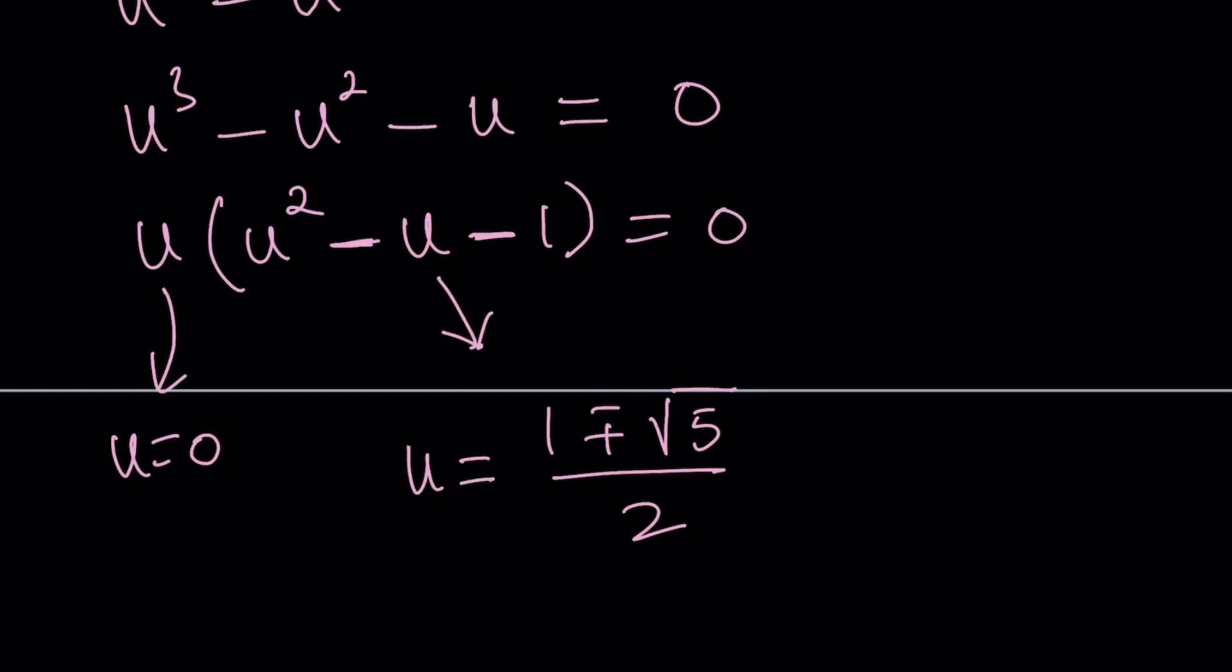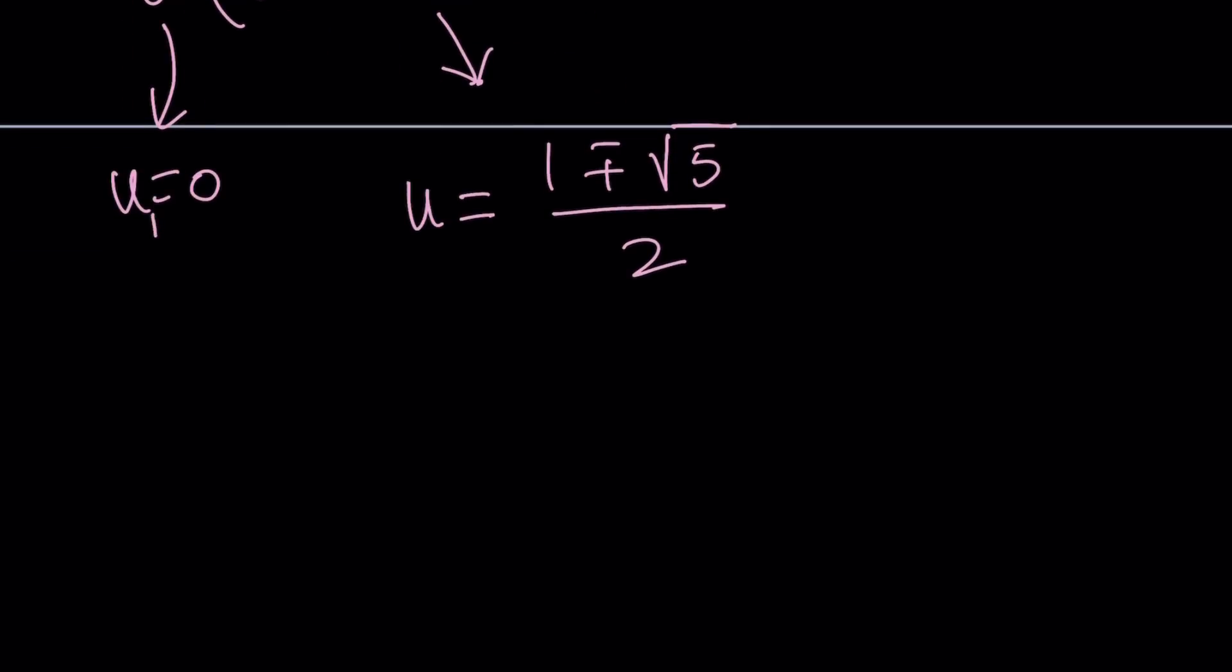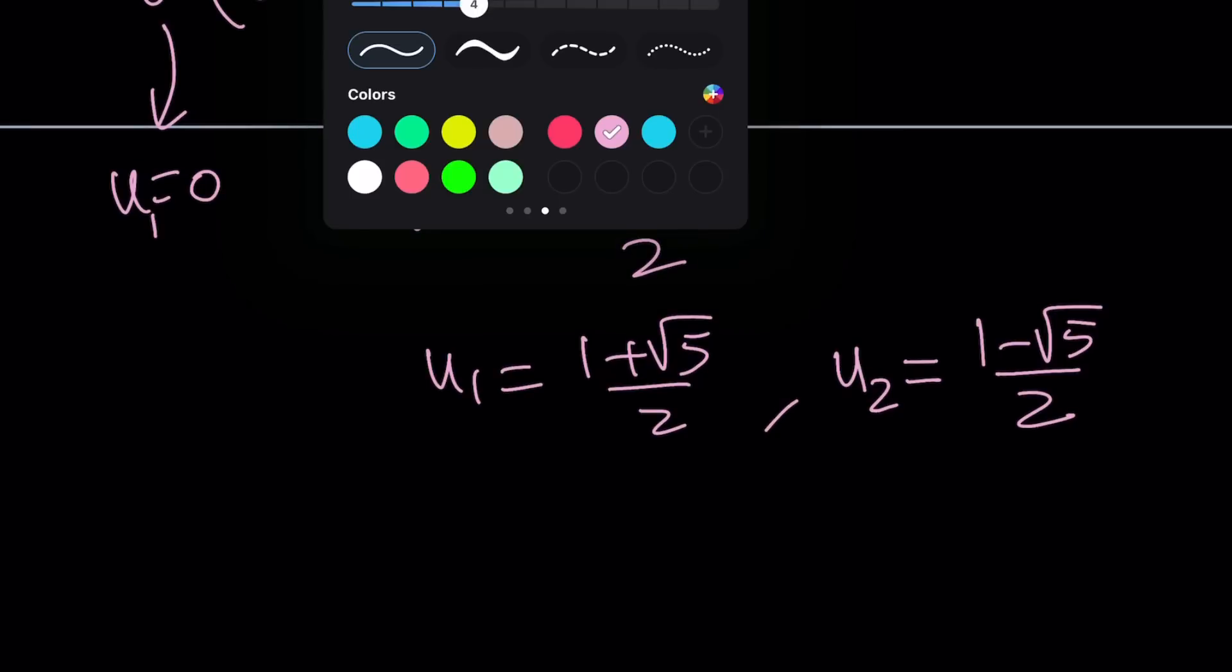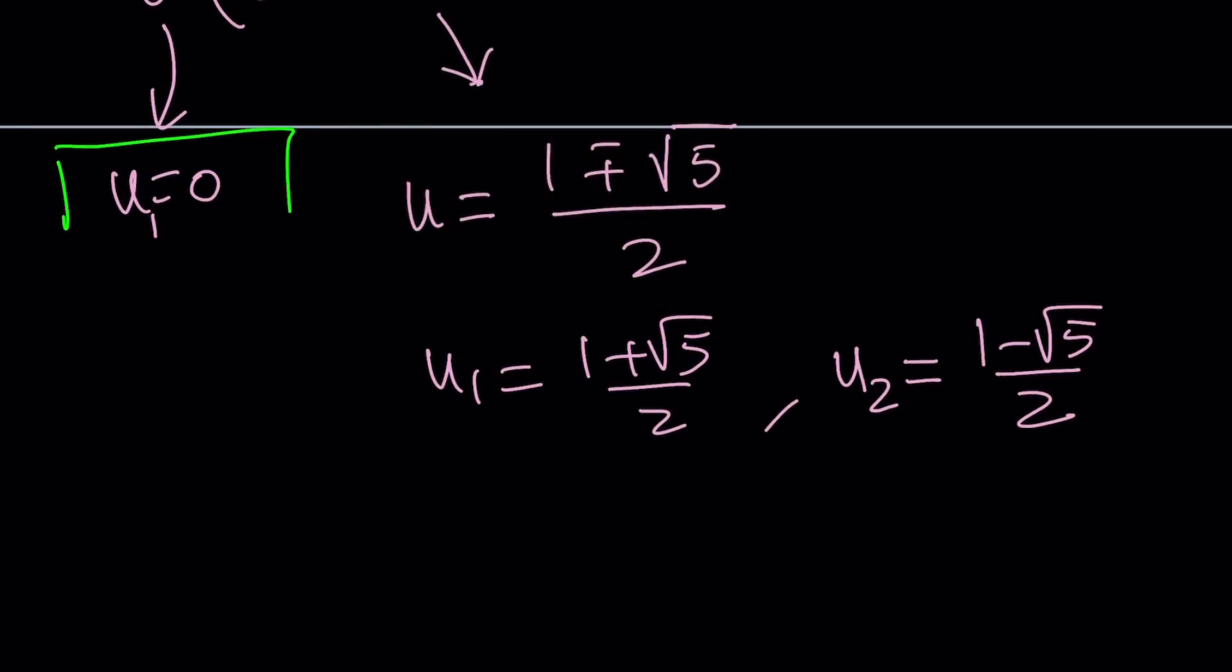And these are the roots. Let's go ahead and split it up. U sub 1 equals 0. U sub 1 equals 1 plus root 5 over 2. And let U sub 2 be 1 minus root 5 over 2. So we have three solutions. 1, 2, and 3. It's cubic, so it's normal, right?